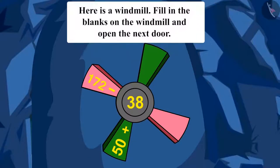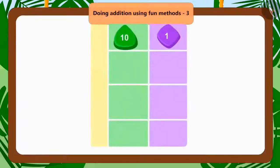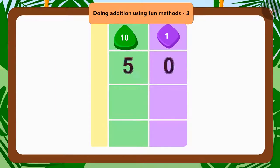Tufan found this puzzle at the second door. Here is a windmill. Fill in the blanks on the windmill and open the next door. Let us find the answer to this puzzle with Tufan. Let us first solve the addition question on the windmill.